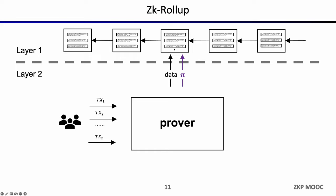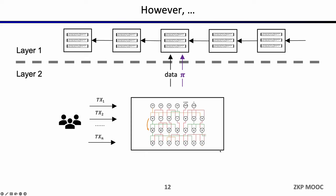Imagine that if a layer 1 network, because it's so decentralized, can process only 10 transactions per second — now every transaction is verifying a proof which proves maybe one thousand transactions are valid. So the network throughput can increase by orders of magnitude. The security is equivalent because the validity of a ZK proof only relies on math and crypto assumptions, and it's mathematically equivalent to the validity of all those n transactions.